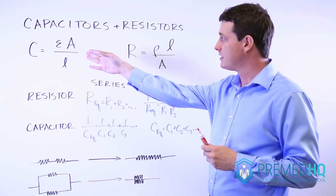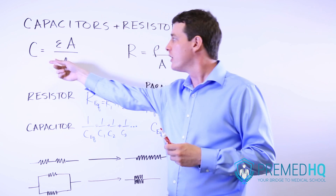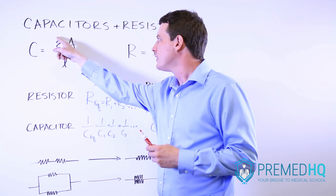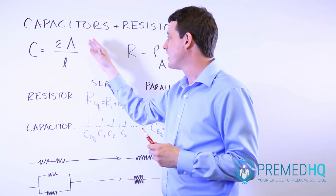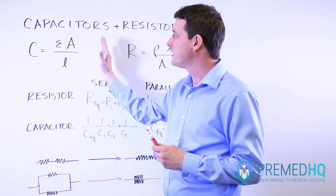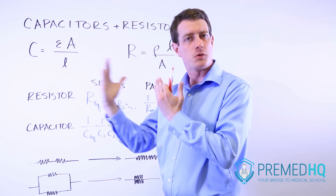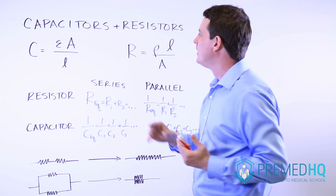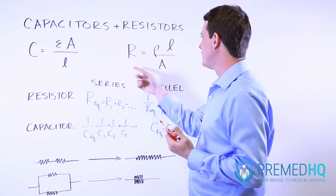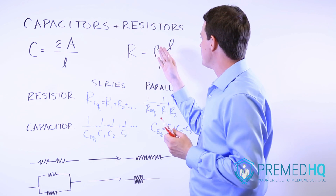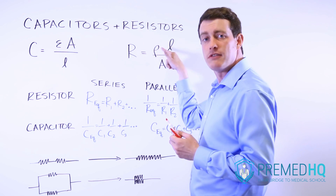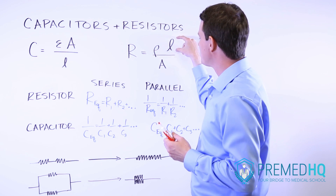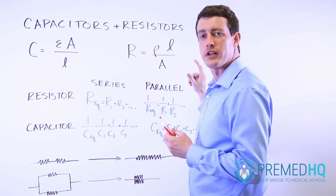The capacitance, which is measured in farads, is the product of the permittivity times the surface area over the distance between the two plates of the capacitor. And the resistance formula is equal to the resistivity, which is represented by rho, times the length over the area.